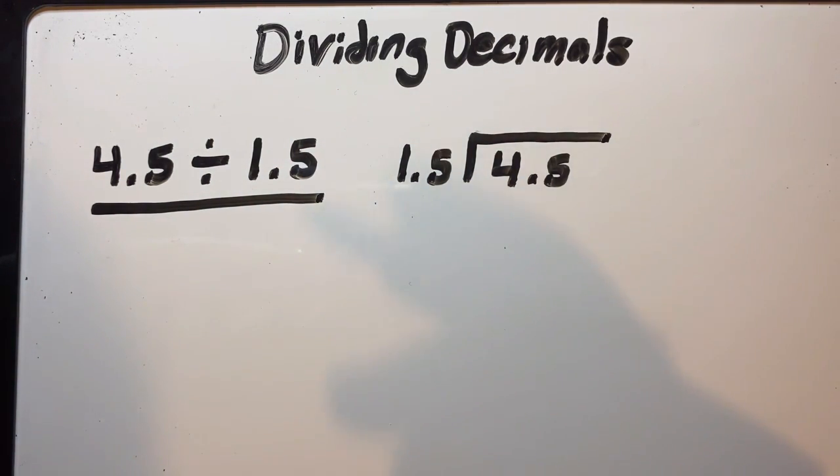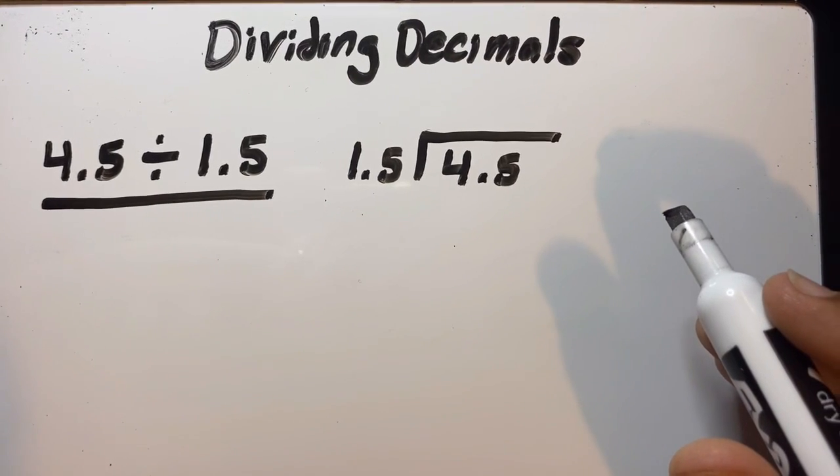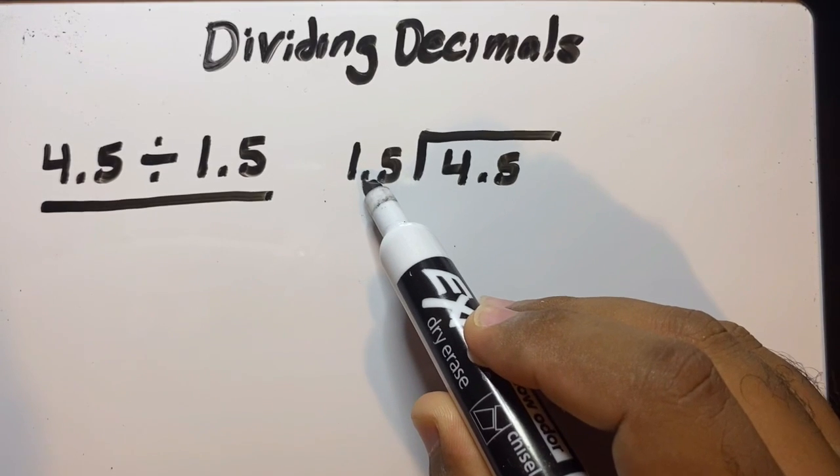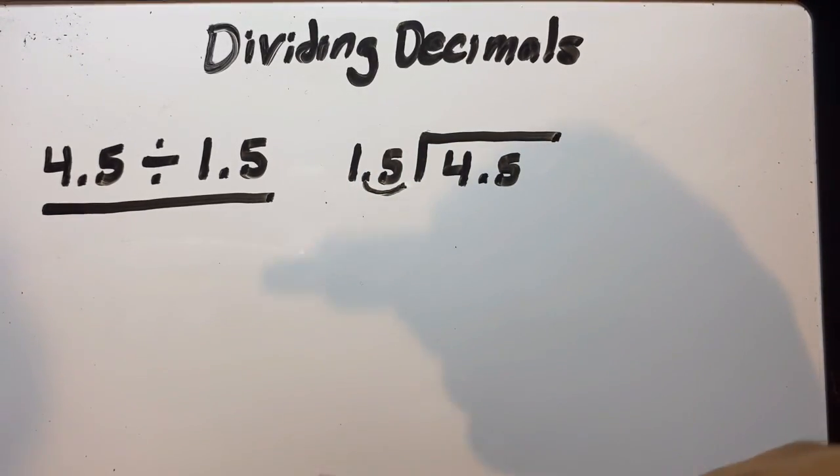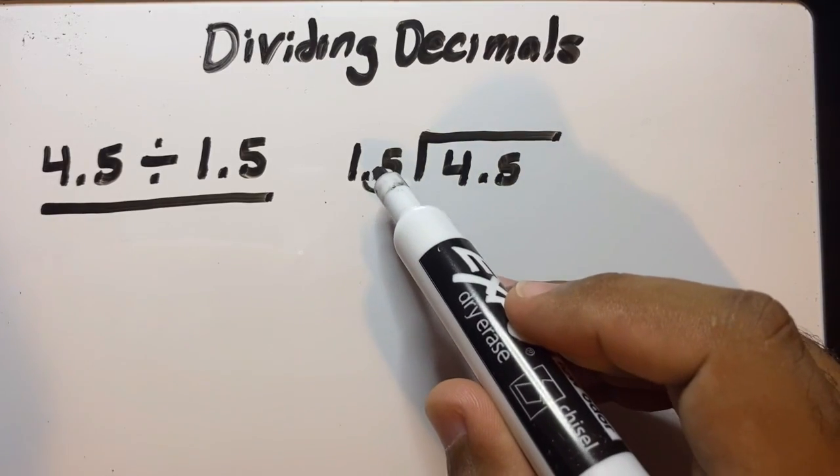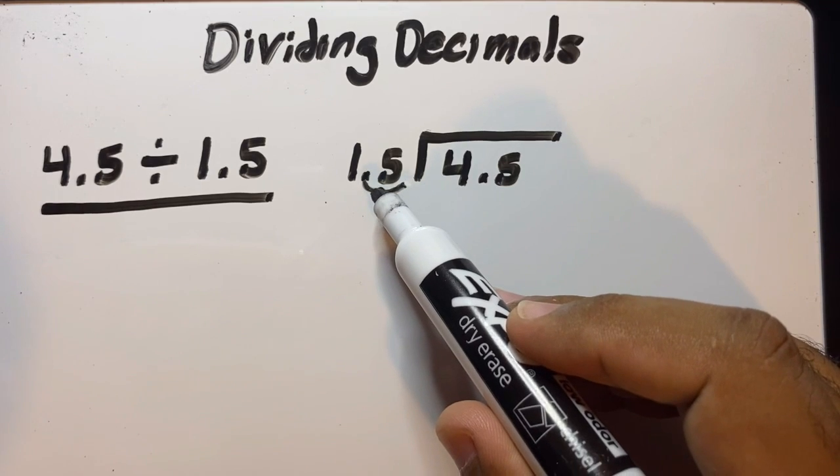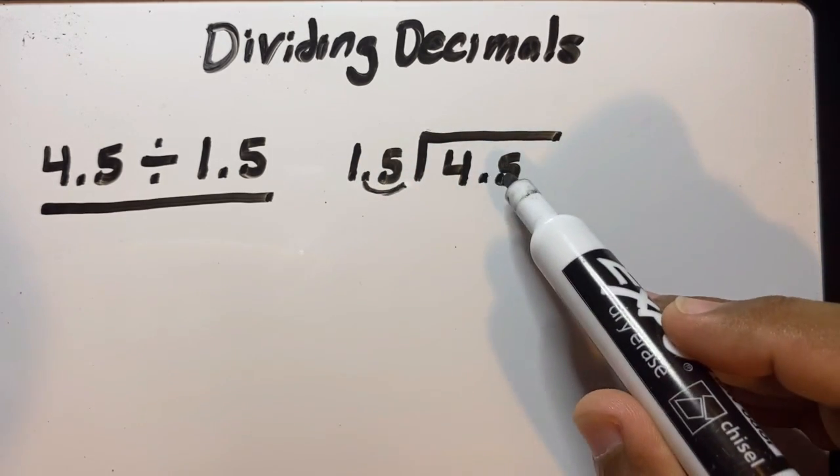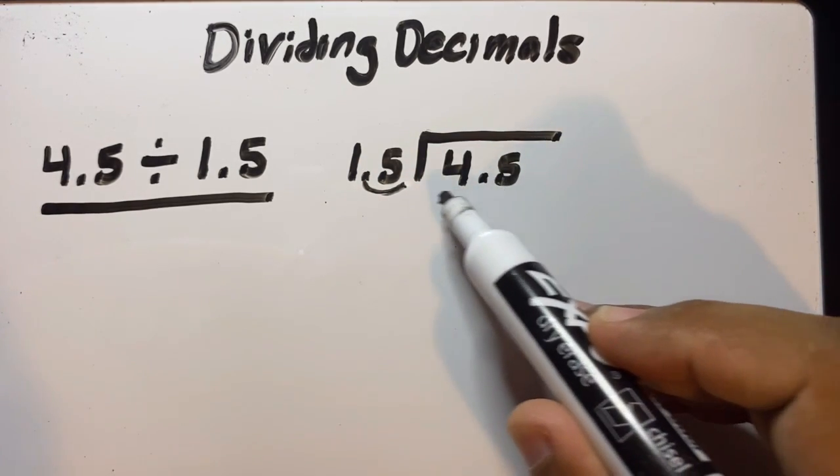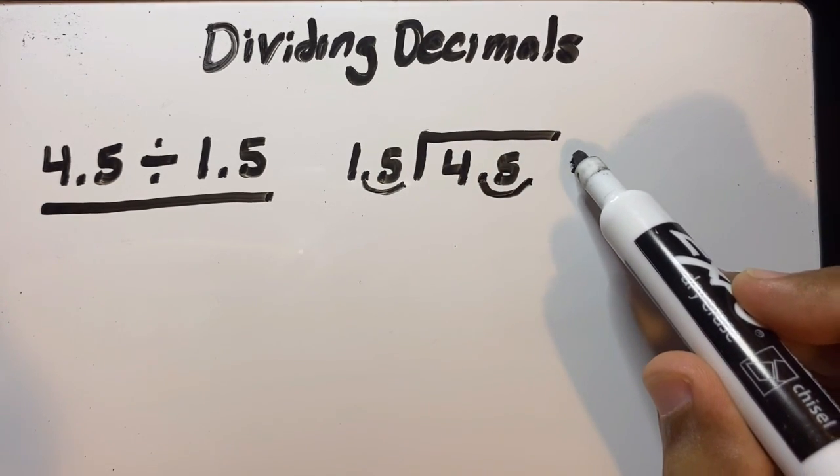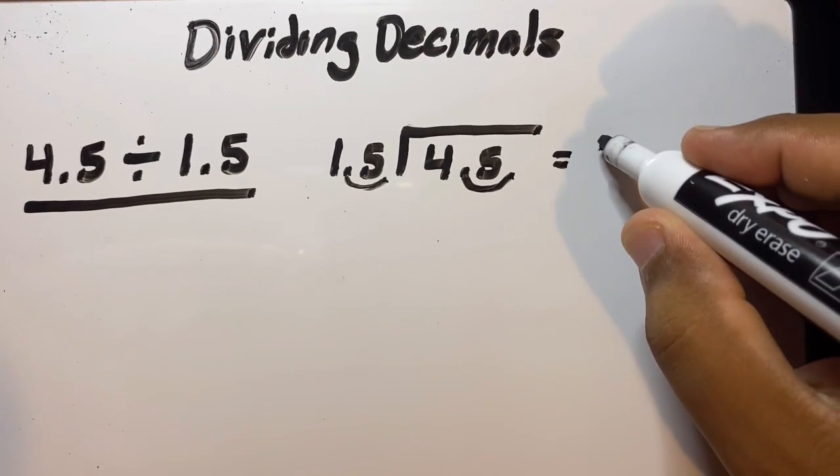In order to make this simpler, all you have to do is move this little decimal to the right however many times you need to make this decimal number into a whole number. However many times you move this decimal point is the same amount of times you have to move that decimal point. So if I move this once, I'm going to move this once. Now my equation should look like this: 15 inside of 45.